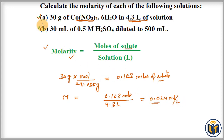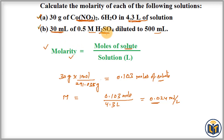For Part B, 30 mL of a 0.5 molarity H2SO4 solution is diluted to 500 mL, and we need to calculate the new molarity. The volume of H2SO4 and its initial concentration are given. For this dilution problem, we apply the formula M1V1 = M2V2.